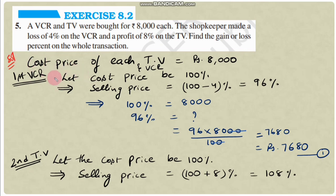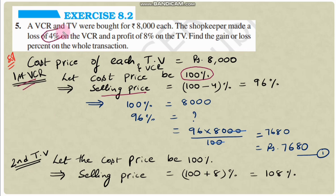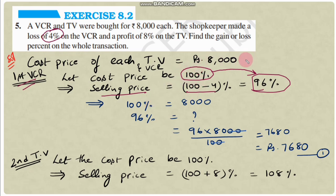Solution: Cost price of each TV and VCR is 8000 rupees. For VCR, let the cost price be 100%. Since there is a 4% loss, selling price = 100 - 4 = 96%. So if cost price is 100% = 8000 rupees, then selling price is 96%.